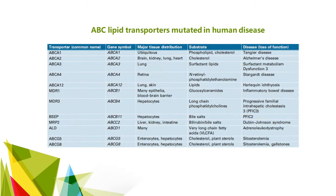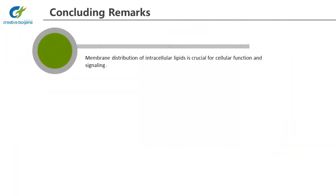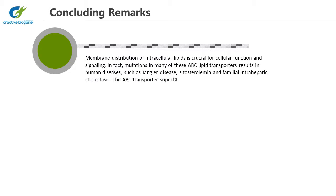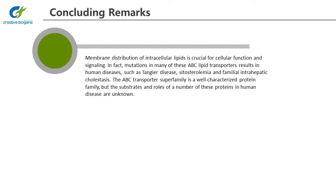This table shows ABC lipid transporters mutated in human disease. Concluding remarks: membrane distribution of intracellular lipids is crucial for cellular function and signaling. In fact, mutations in many of these ABC lipid transporters result in human diseases, such as Tangier disease, sitosterolemia and familial intrahepatic cholestasis. The ABC transporter superfamily is a well-characterized protein family, but the substrates and roles of a number of these proteins in human disease are unknown.